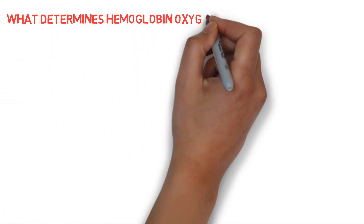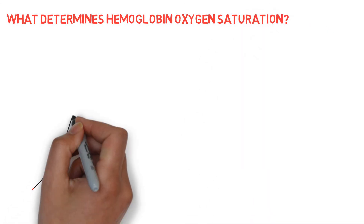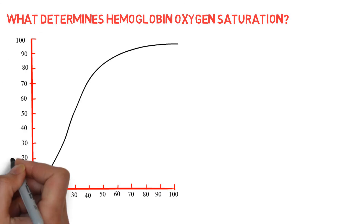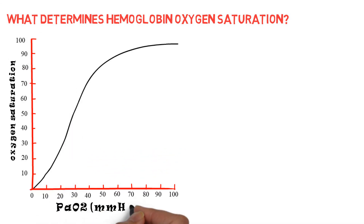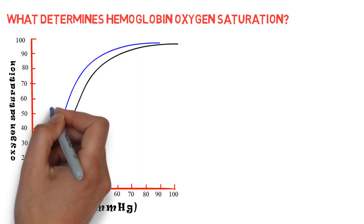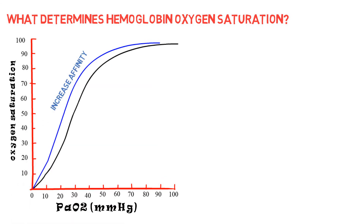What determines hemoglobin oxygen saturation? The saturation of hemoglobin is determined by the oxyhemoglobin dissociation curve, for which oxygen saturation is a function of PO2. The affinity of hemoglobin for oxygen is high at high saturations and less at lower saturations. This effect facilitates oxygen loading in the lungs where the PO2 is high, and oxygen unloading to the tissues where the PO2 is low. The position of the oxyhemoglobin dissociation curve is not fixed. Factors that shift the curve to the left increase the affinity of hemoglobin for oxygen, and factors that shift the curve to the right decrease the affinity of hemoglobin for oxygen.